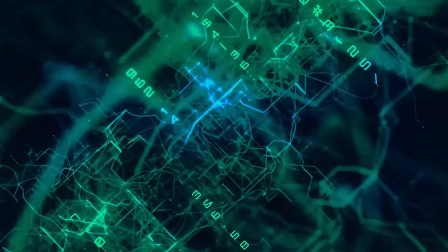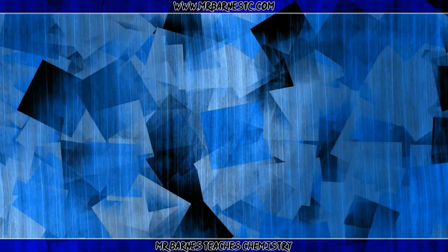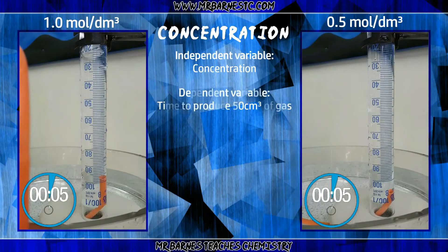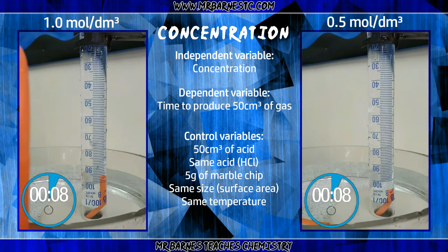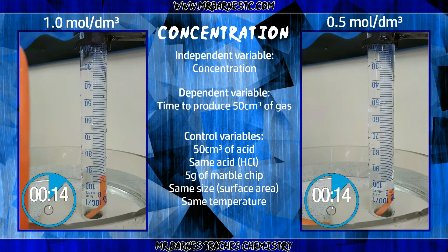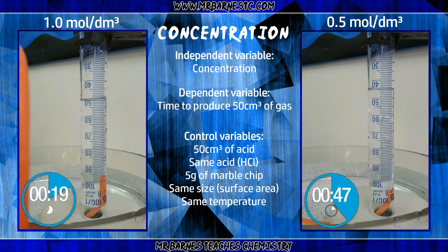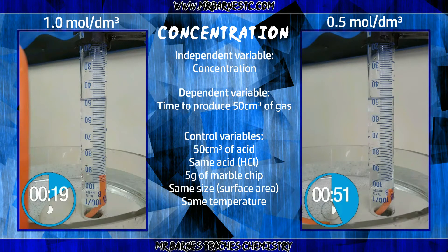The first one we're going to look at is how changing the concentration affects the rate of reaction. I've kept the volume at 50cm³ and the mass of marble chips at 5g. All I've done is change the concentration of my hydrochloric acid - the one on the left is a high concentration, the one on the right is a low concentration. The left one has gone a lot quicker, so the higher the concentration, the faster the rate of reaction. The right one is going a lot slower, taking 51 seconds. So to increase the rate of reaction, increase the concentration of the acid.